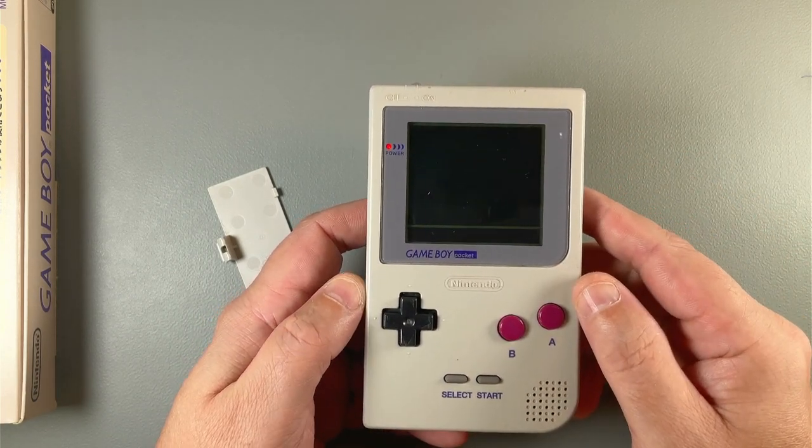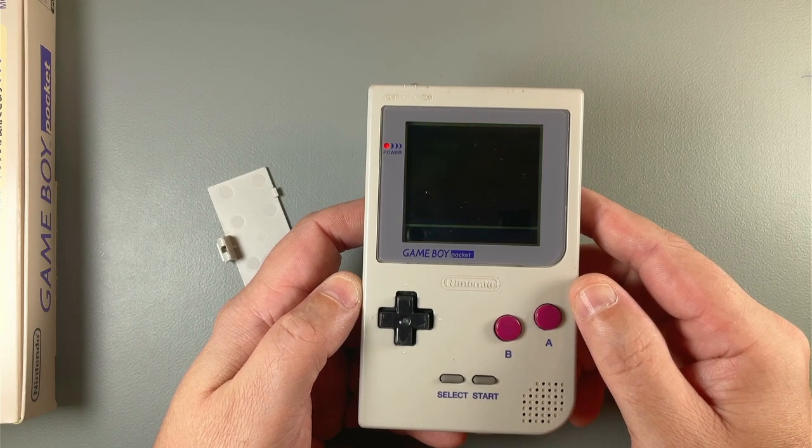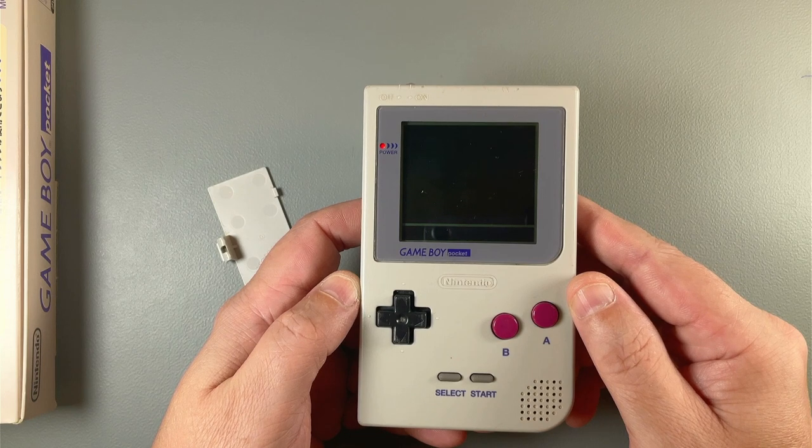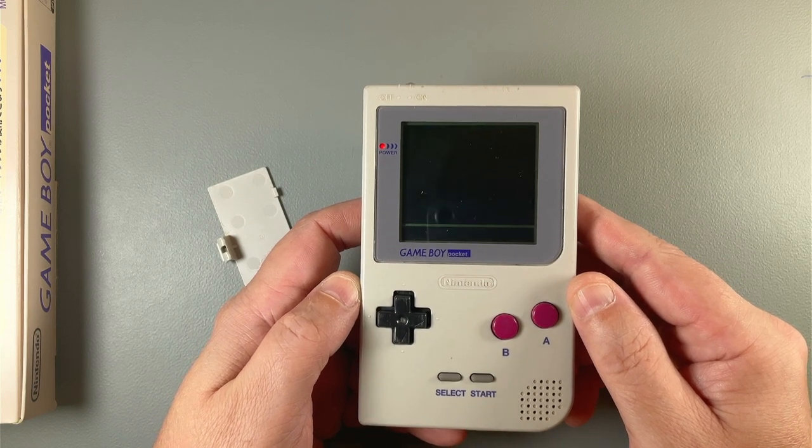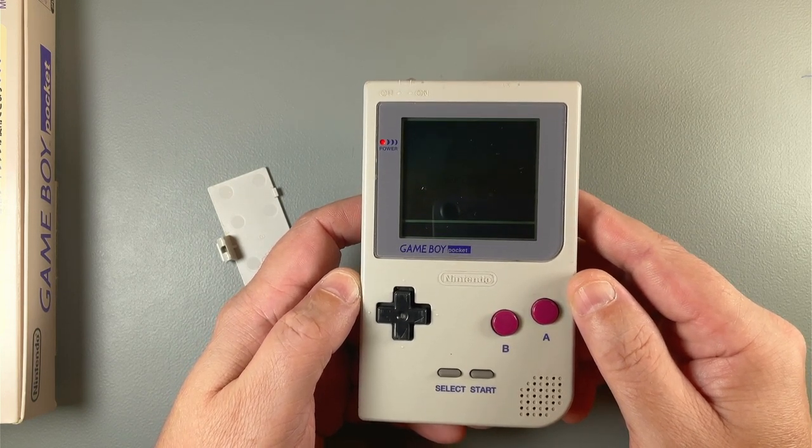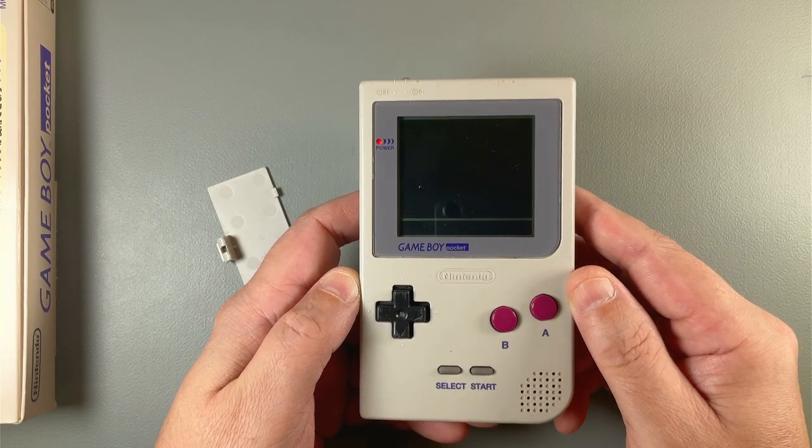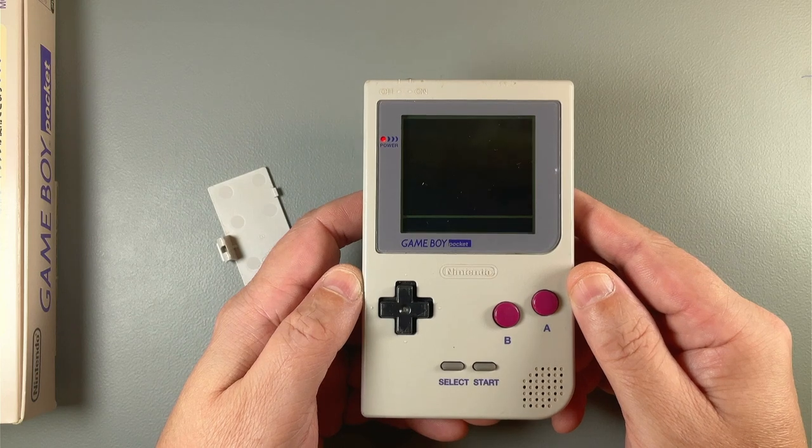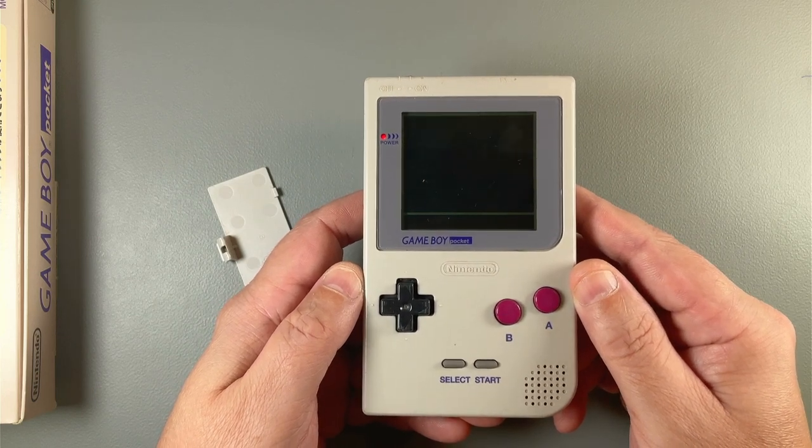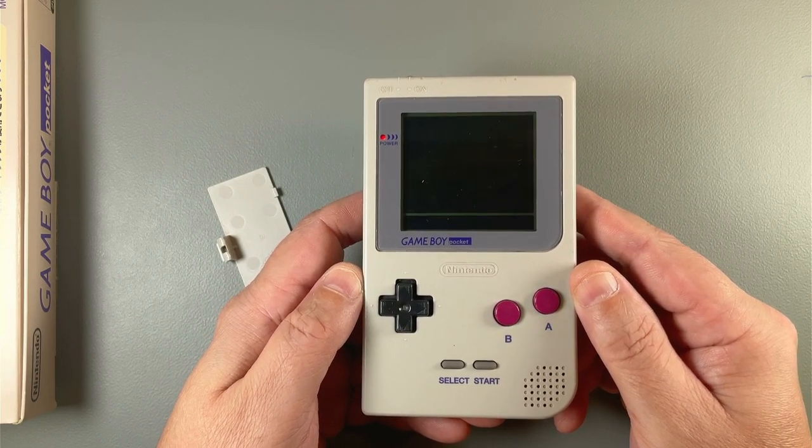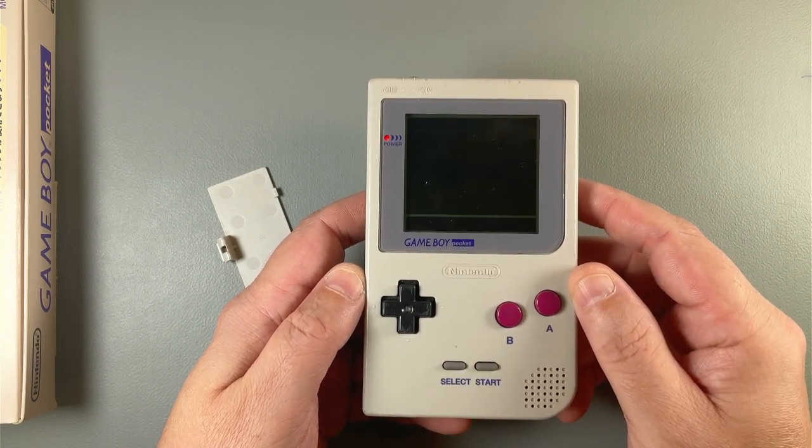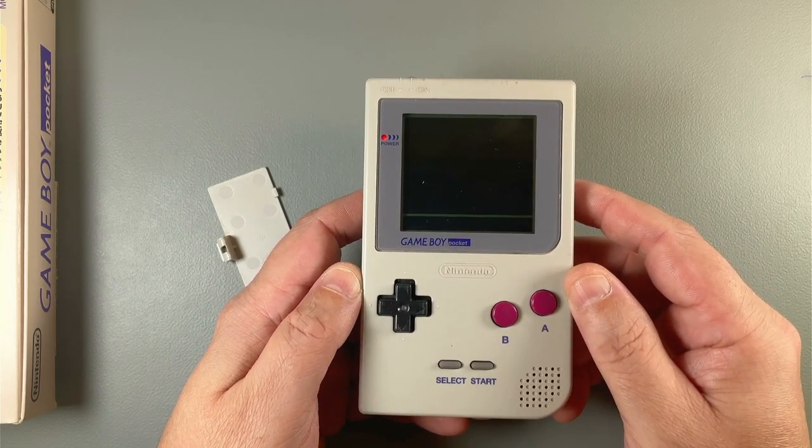Vertical lines are a common problem on original DMG and they are easy to fix, but from my experience, Game Boy Pocket suffers from horizontal lines more often than vertical lines. And yes, they are not easy to fix, but I've done quite a few of these and I'd say my success rate is about 70, maybe 80%. So I can fix 7, 8 out of 10 devices with this problem. I'll switch to microscope view now and let's see what we can do with this one.